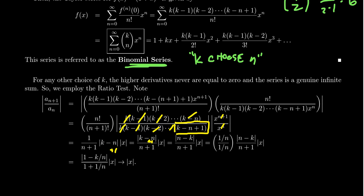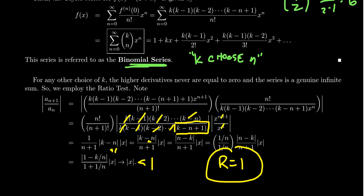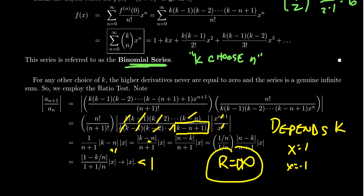Taking the limit as n goes to infinity, this ratio goes to the absolute value of x. By the ratio test, we need |x| < 1, which tells us the radius of convergence is one. There are exceptions depending on k — if k is a positive integer the radius is actually infinity since it's just a polynomial. For other values of k, the radius is one, and whether it converges at x = 1 or x = -1 depends on k. Taylor's inequality can be used to show the function equals its binomial series.